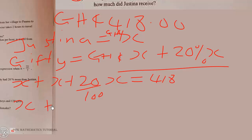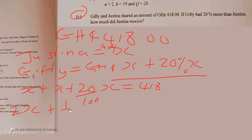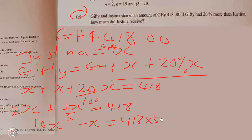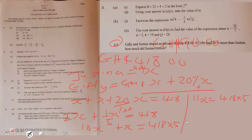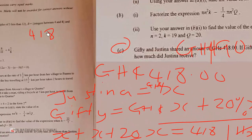20% is the same as 1 over 5, so this becomes 2X plus one-fifth X equals 418. Multiplying through by 5 gives 10X plus X equals 418 times 5, so 11X equals 2090. Dividing both sides by 11, we get X equals 418 times 5 over 11.